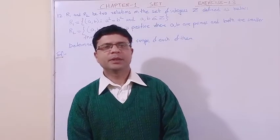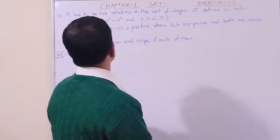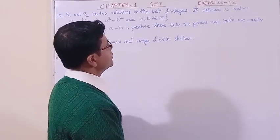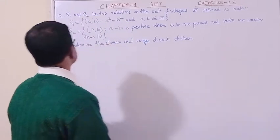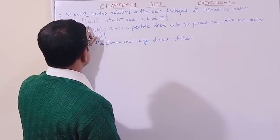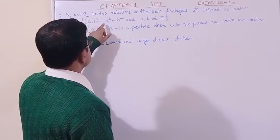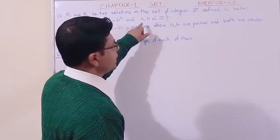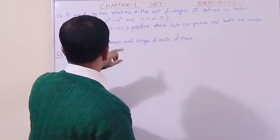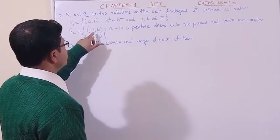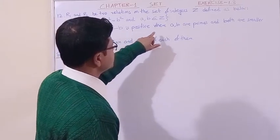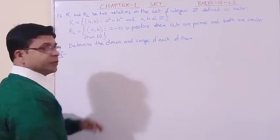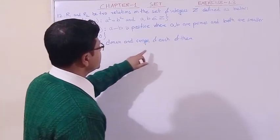Now dear students we are in question number 12. Let us read the question: R1 and R2 are two relations on the set of integers Z. The first relation R1 is the set of ordered pairs (a, b) such that a² = b², where a, b ∈ Z. The second relation R2 is the set of ordered pairs (a, b) such that a - b is positive, where a, b are primes and both are smaller than 10.